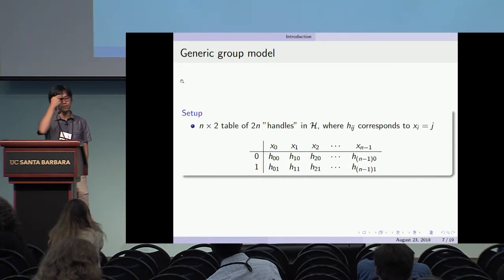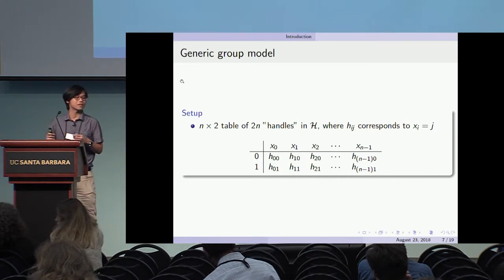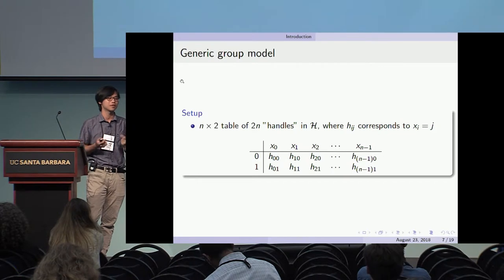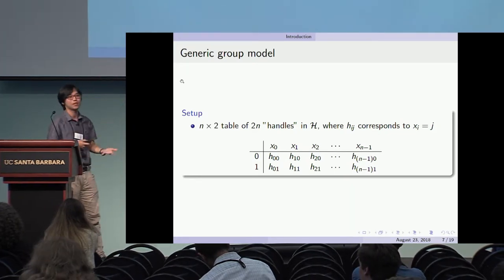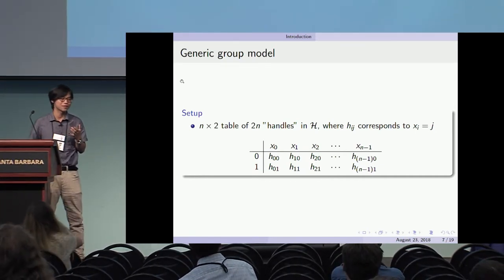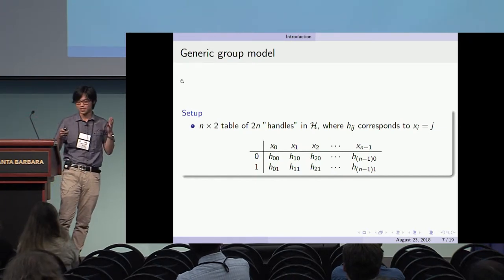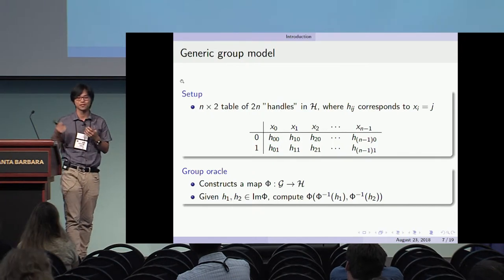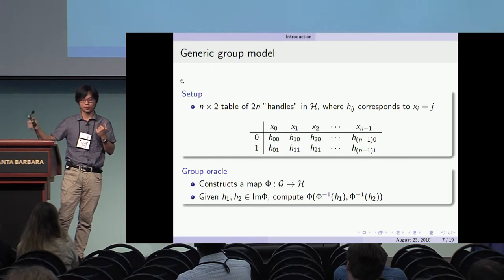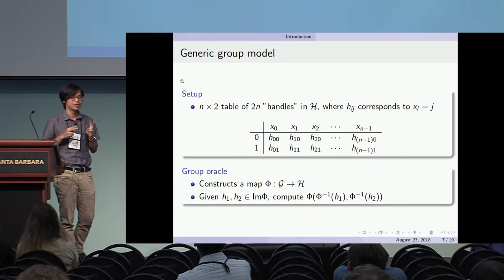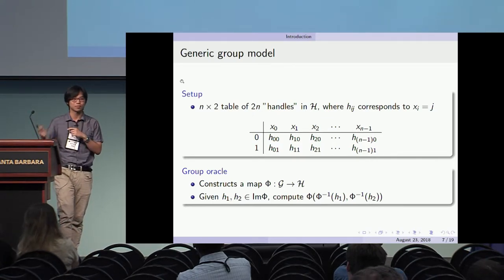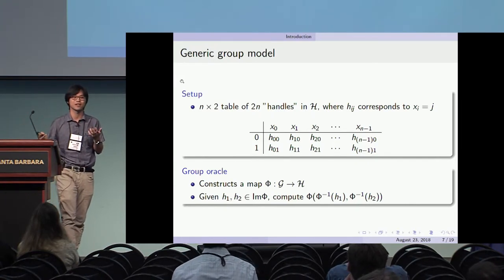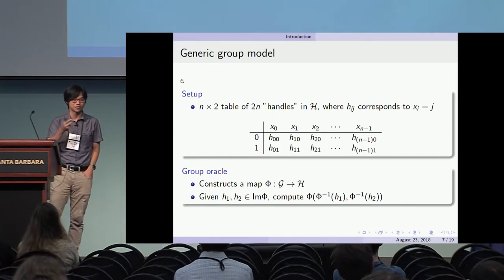The proof of security is in the generic group model. We set up a table of two-n handles — think of these handles as arbitrary strings in a large enough space that there are no collisions. These handles have no meaning except for interacting with the generic group oracle. The group oracle has some underlying group (cyclic group, integer ring of polynomials), and initializes a random embedding from this group into the handle space. You can give the oracle two elements and it computes the product and returns a handle for it. A handle for a new product not previously seen will be uniformly distributed in the handle space.